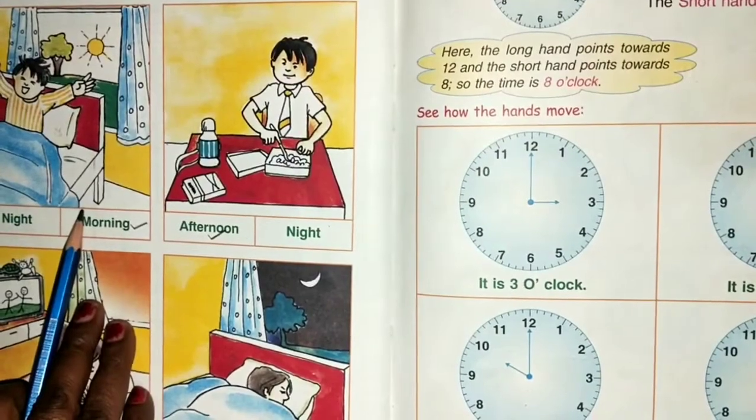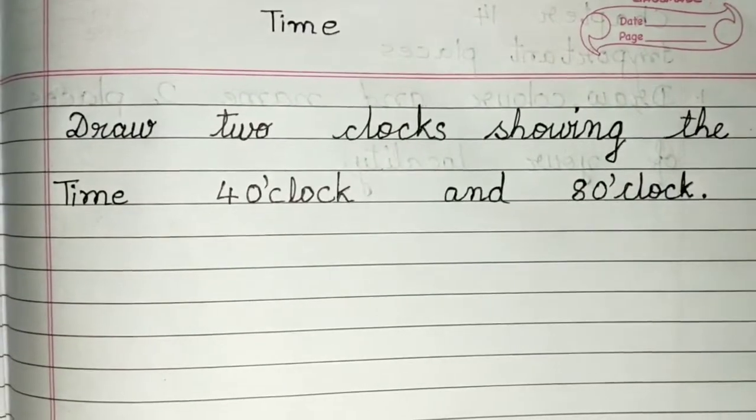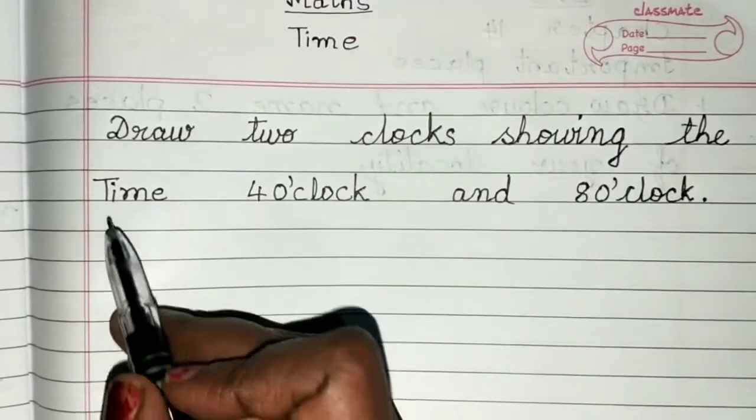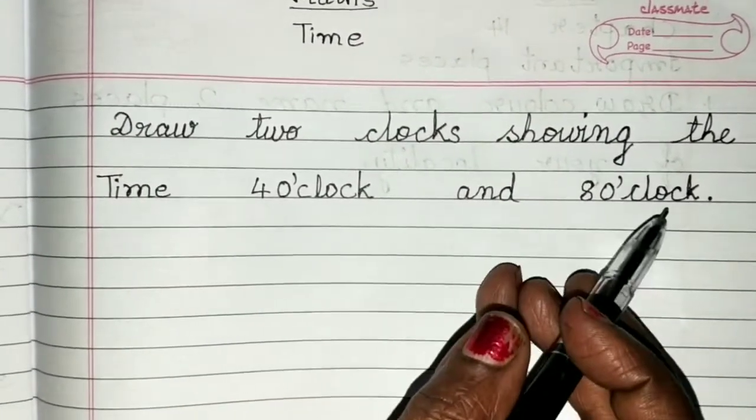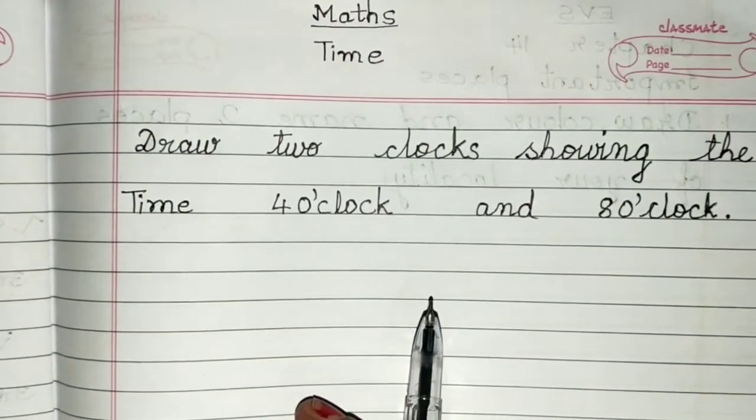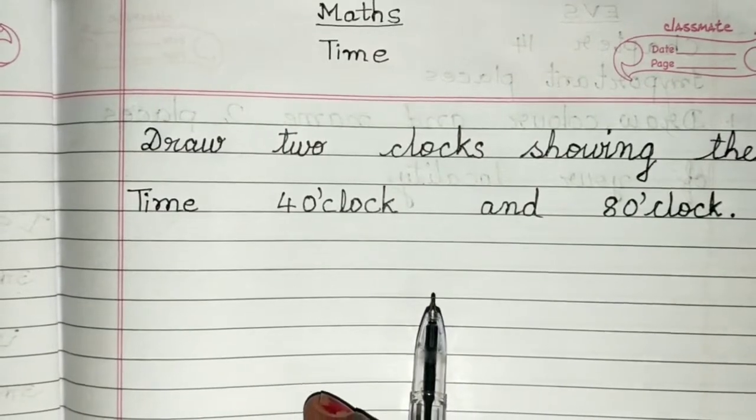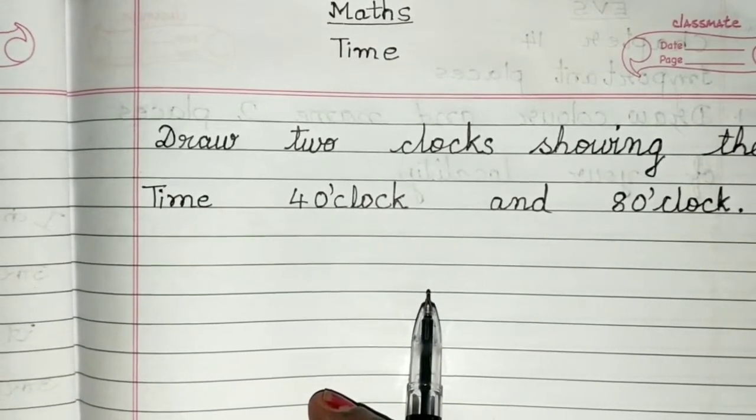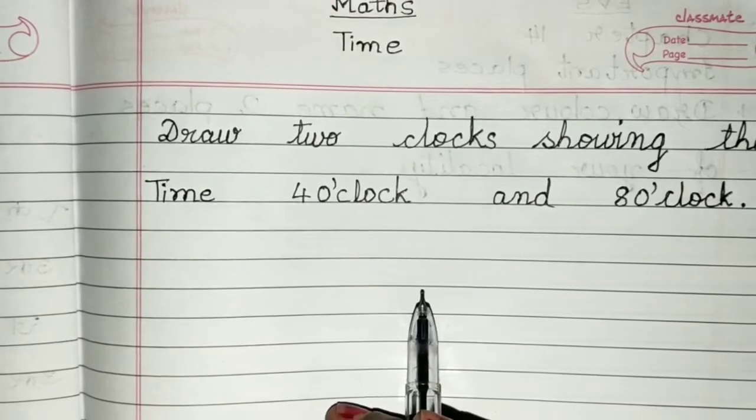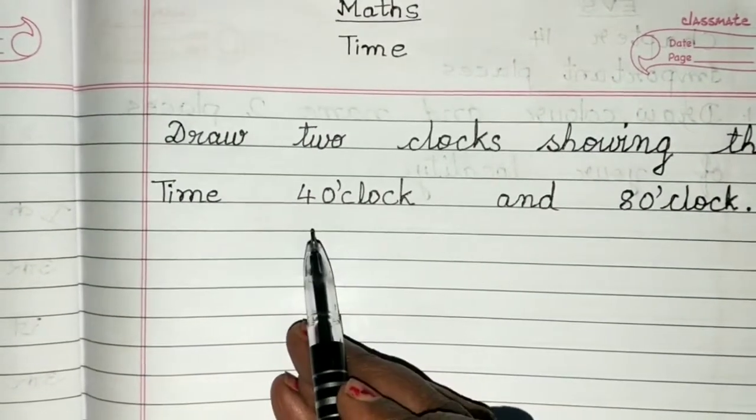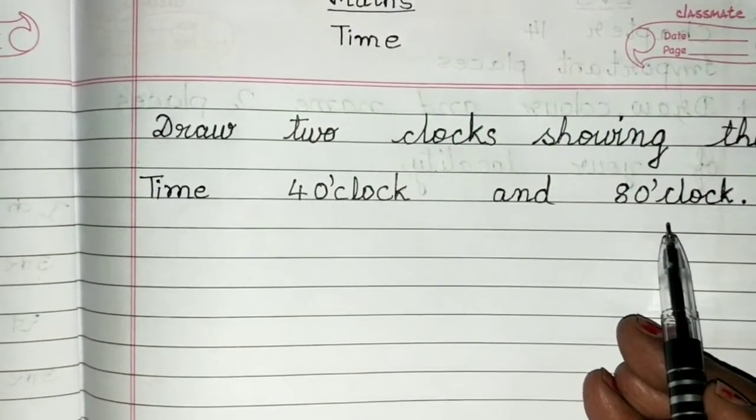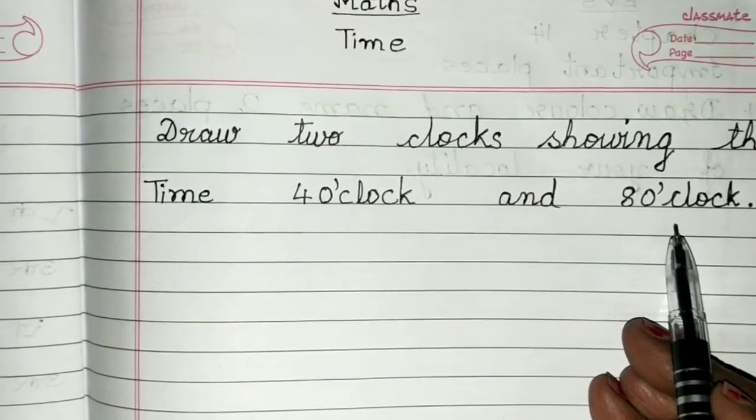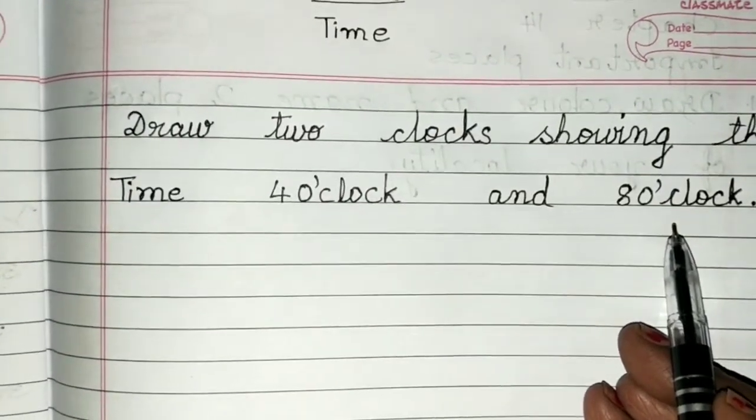And you have one more homework. In maths, time: draw two clocks showing the time 4 o'clock and 8 o'clock. You have to make two clocks. You understand how a clock is made. On its face, 12 numbers are written, and it has two hands: minute hand and hour hand. You have to put all the numbers in both clocks and show both hands. In one, it should show 4, and in the other, it should show 8. Is this clear, children? What is written here is written in very easy sentences. You will definitely understand and make it and send it. This is your maths homework. Thank you.